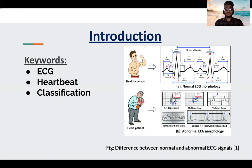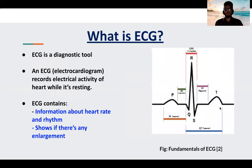ECG, or electrocardiogram, is an established method for cardiac and other health-related problems. On the right side you can see the visual differences in terms of signals between normal and abnormal ECG morphologies. ECG is a diagnostic tool that records the electrical activity of the heart while it is resting. ECG contains information about heart rate and rhythm and shows if there is any kind of enlargement present in the heart.